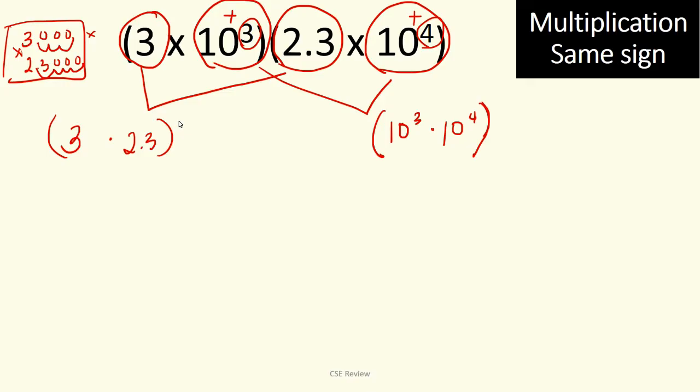So 3 times 2.3, that's going to give us 6.9. Now, if you don't know how to multiply, you can practice doing that. I just multiplied 3 and 2.3. So 6.9. Now, on this side, you have 10 cubed times 10 to the fourth. Now, when you're multiplying with exponents, and they have the same base number, what you do is basically 10, and then you add their exponent. So that is 3 plus 4. That is going to give you 7. So the answer becomes 6.9 times 10 to the seventh power.